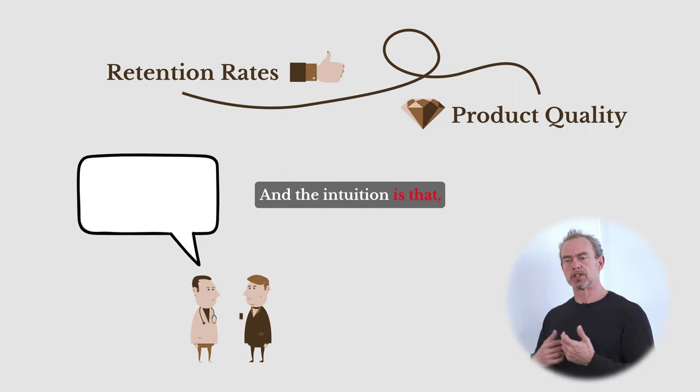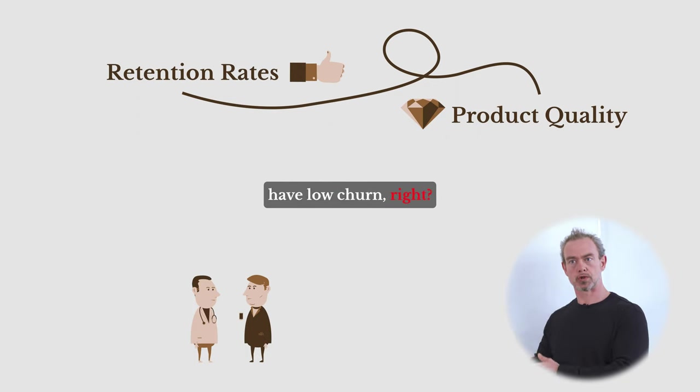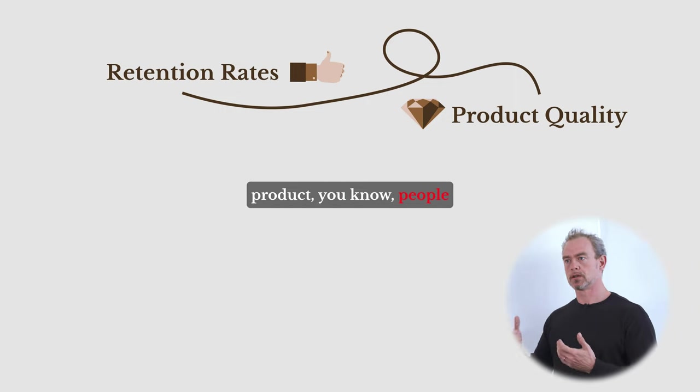And the intuition is that if we have high customer satisfaction, we will also have low churn, right? So there is some sort of relationship where good product, people want it, so they stay. Poor product, people don't really like it, so they leave.